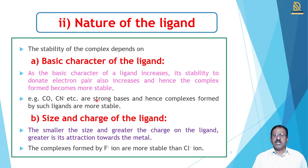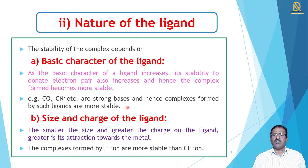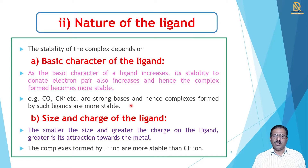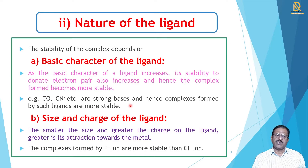For example, we take carbonyl ligand (CO) and cyanide ligand (CN⁻). These are strong bases, so their basic character is very high. Therefore, the complexes formed by CN⁻ and CO are more stable and have high strength compared to other ligands with less basic character.